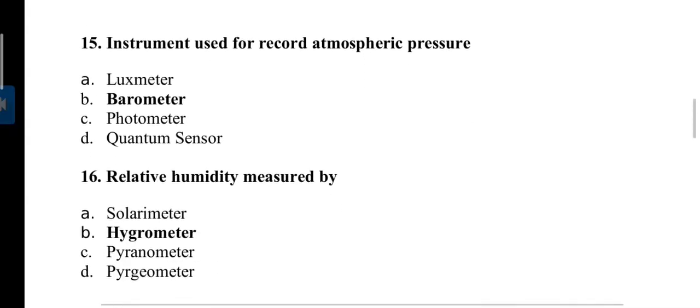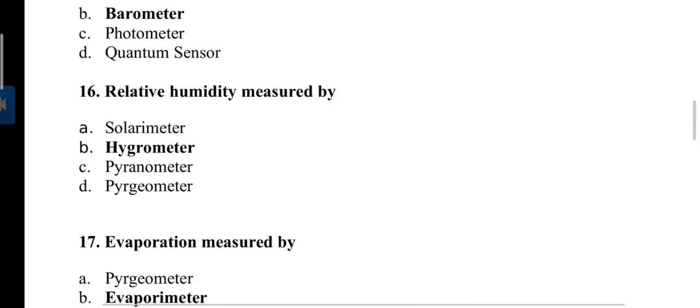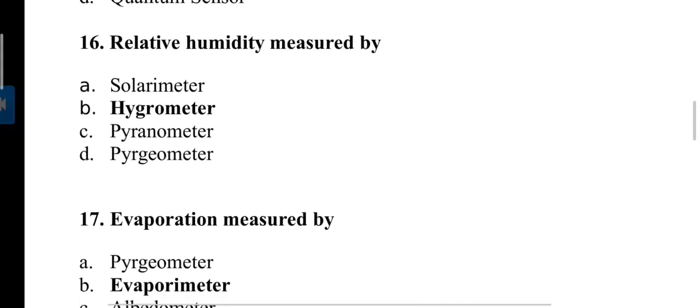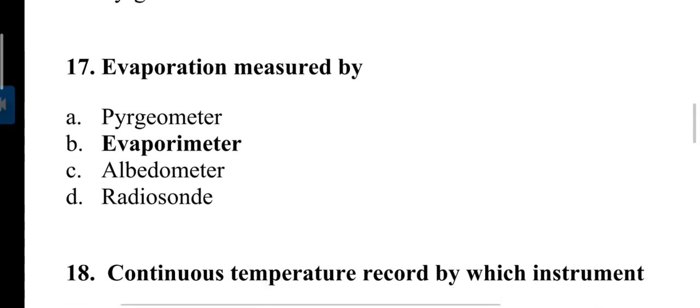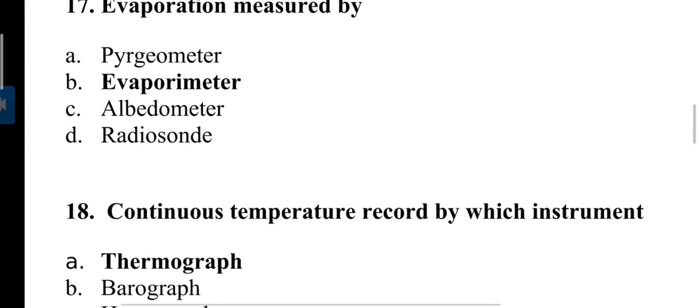Instrument used to record atmospheric pressure: answer is barometer, while lux meter is used to measure brightness of any objects. Next question: Relative humidity is measured by hygrometer. Next, evaporation is measured by evaporimeter, and albedometer is used to measure albedo or reflecting radiation from any surface.